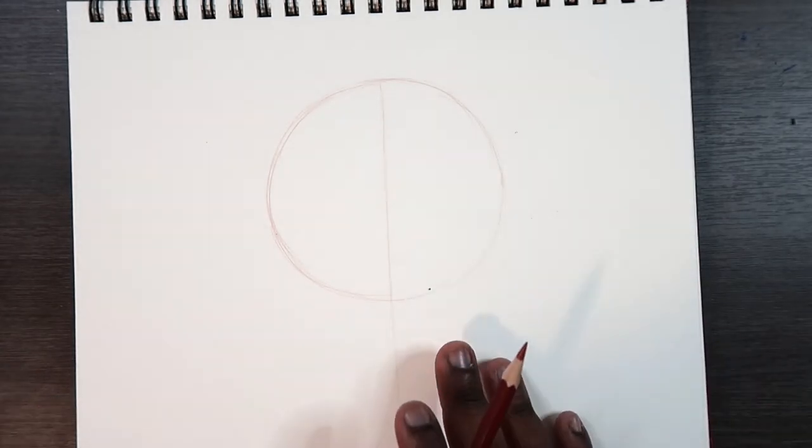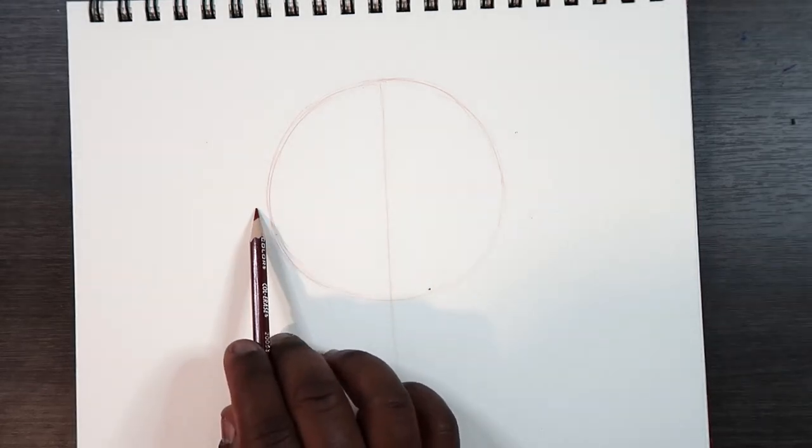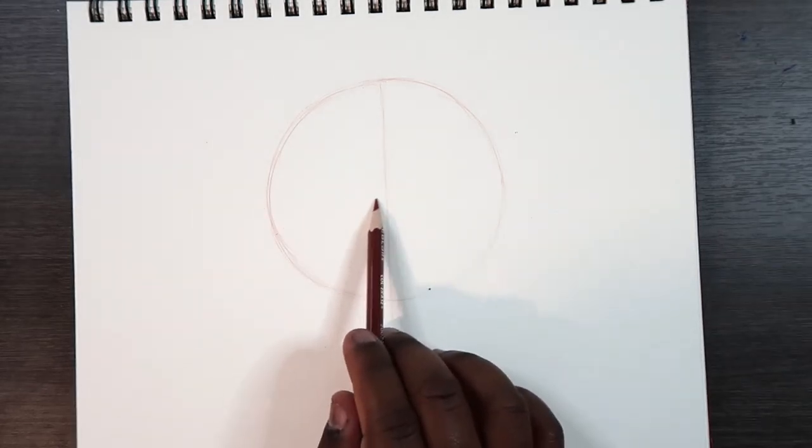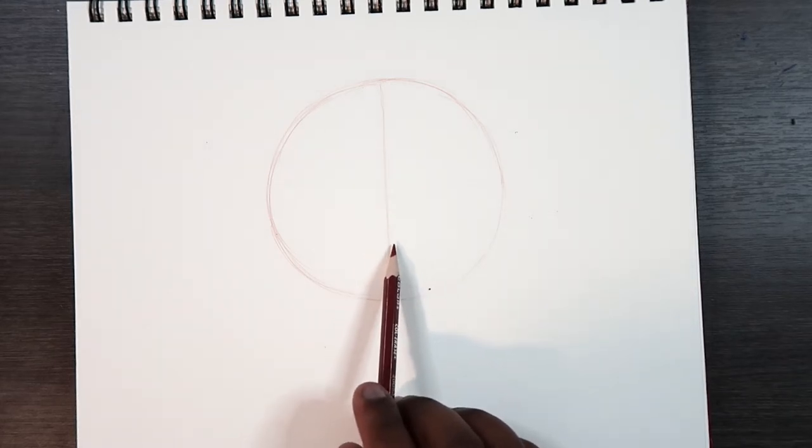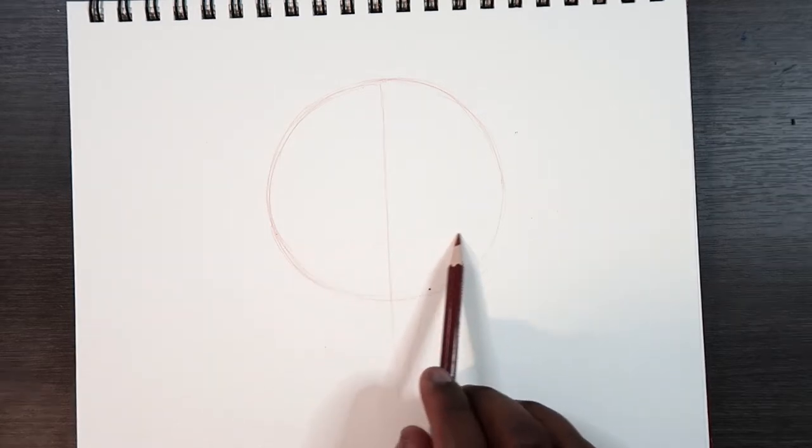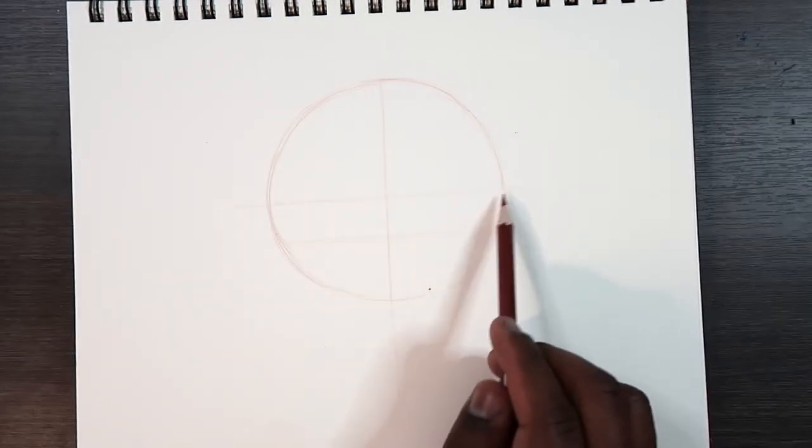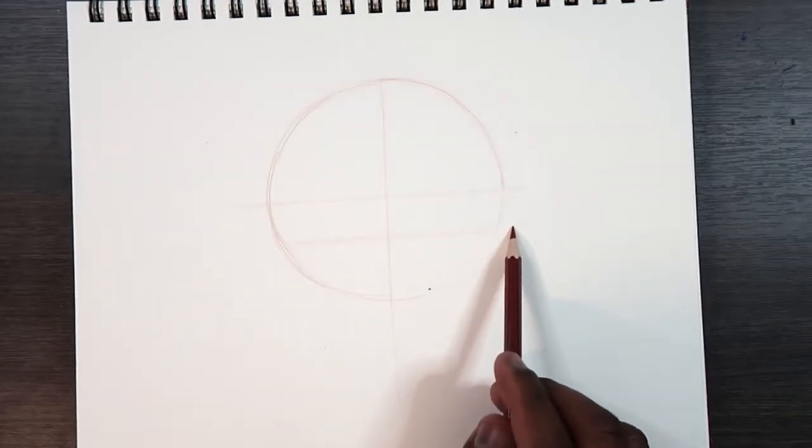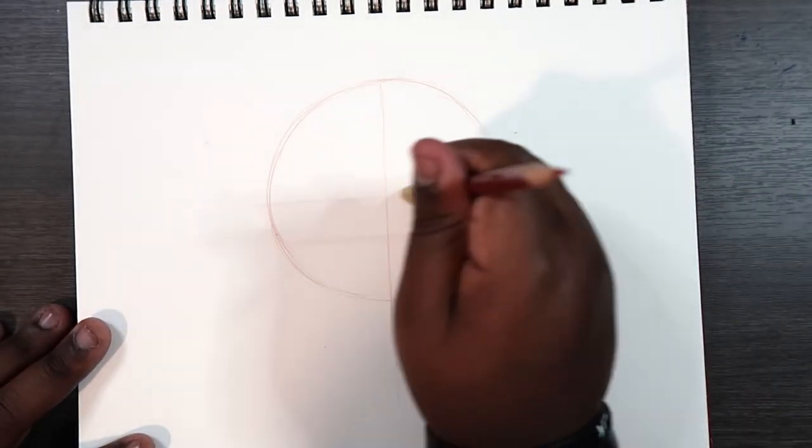The next guideline that we're going to draw is the one that the eyes are going to rest on. So instead of making a line that goes halfway across the circle, it's going to go a little bit underneath. I'd say about two-thirds of the way down. So not this one, but the one underneath it. That's the one that the eyes are going to rest on.